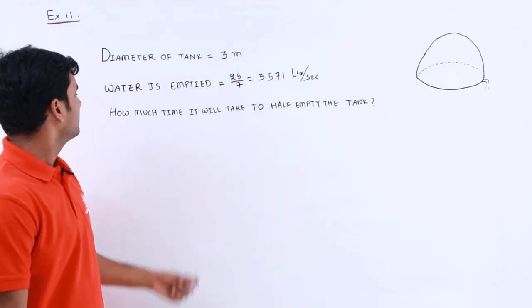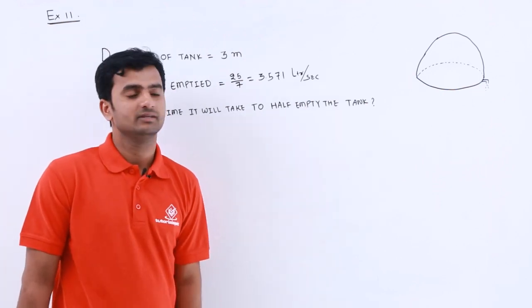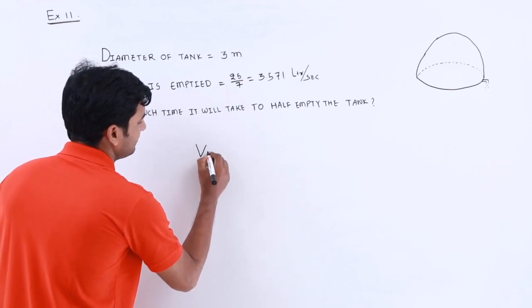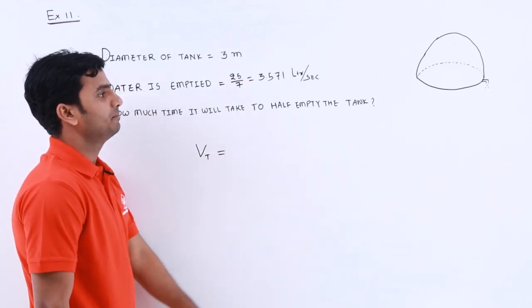Here we have to find out how much time it will take to half empty the tank. So let's find out the volume of tank. Let's consider it as VT. We know the sphere volume formula, but this is a hemisphere.